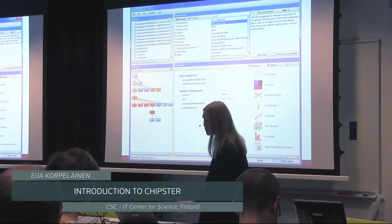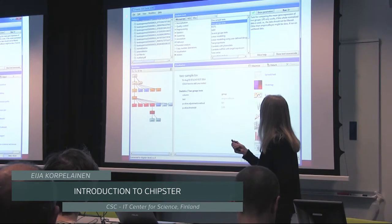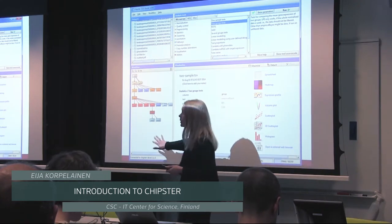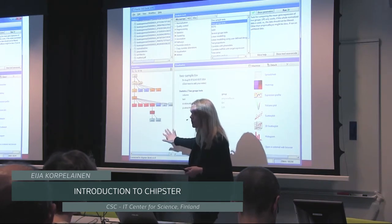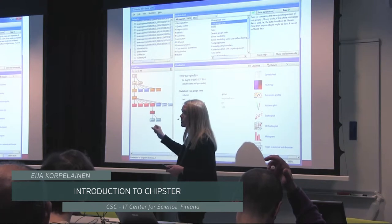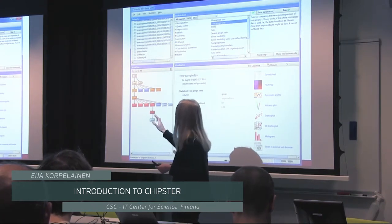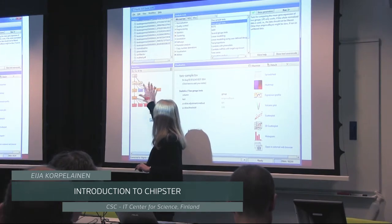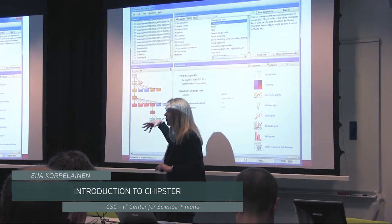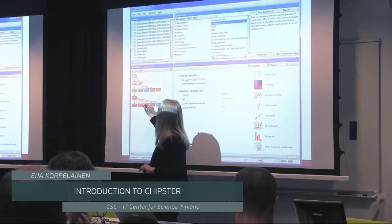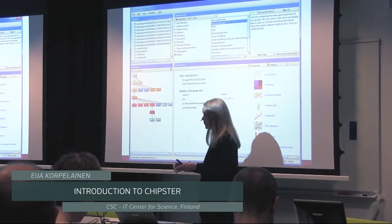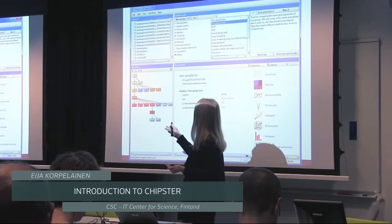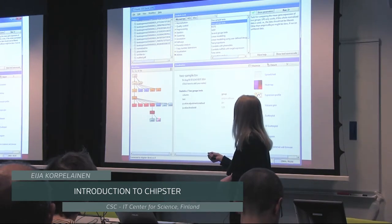This is what the user interface looks like. We have the files — here I have an analysis session. The same files that I listed here are shown here as boxes. We call this a workflow view, and this is what the user uses when he or she wants to save a workflow. They don't explicitly construct the workflow first; they do the analysis, perhaps with a smaller dataset to check that everything works. Then from this view, which shows the relationships of the files, you can save the workflow. The files are shown as boxes with different colors, and the color depends on the category of the analysis tool used to create that particular file — it just helps you navigate within this view.